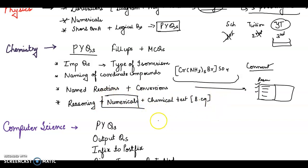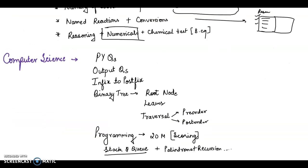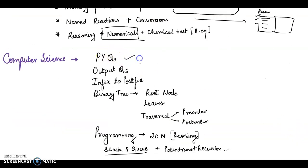For computer science, previous year questions must be referred. Then output questions in infix to postfix is very important. Then binary tree, you should be clear with the concepts of root node, leaves and so on, the parent root. Traversal will be asked. They'll ask you to traverse the tree in pre-order or post-order so you'll have to study that as well.